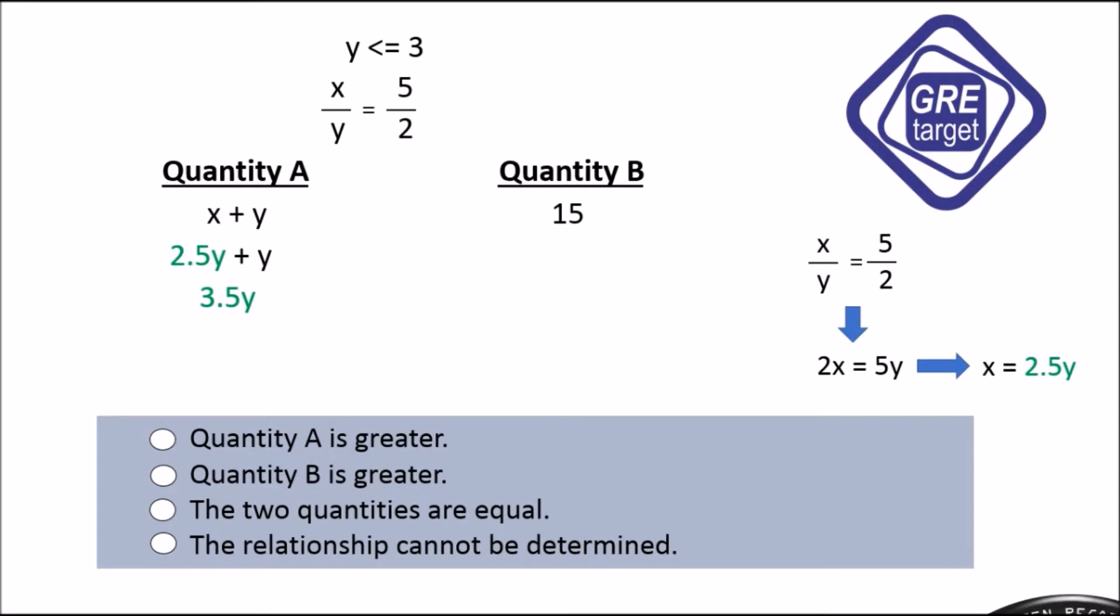After that we will replace the y value. The y value at most is 3, so let's replace: 3.5 into 3, we will get 10.5, which is less than quantity B which is 15. So our correct answer is quantity B is greater. Thank you.